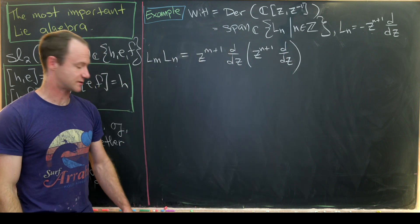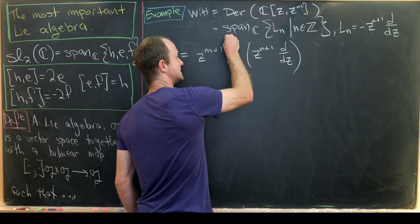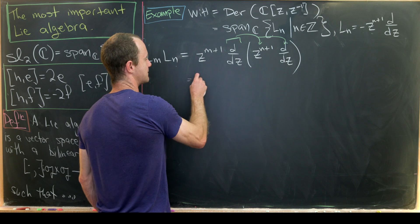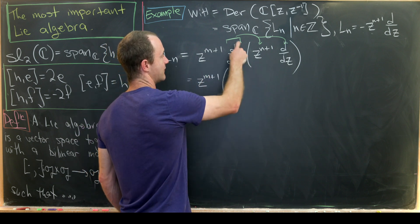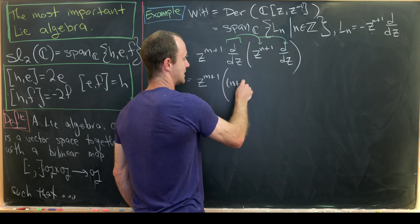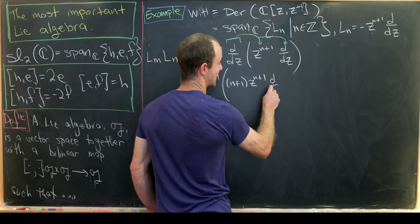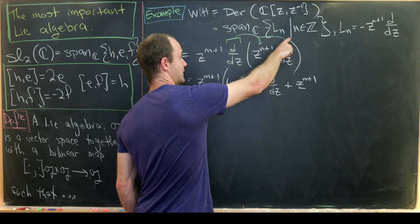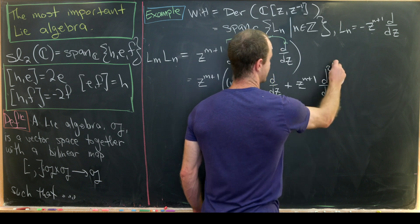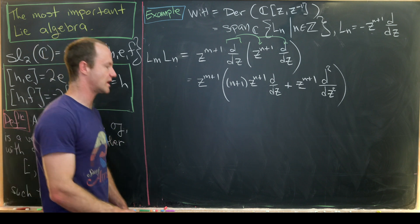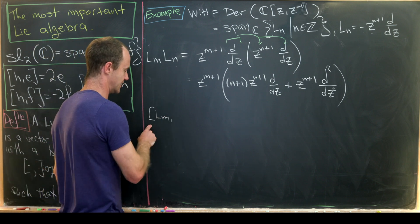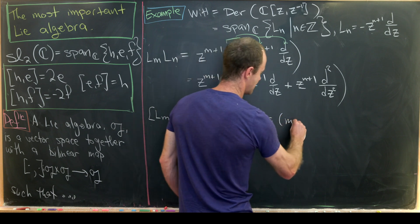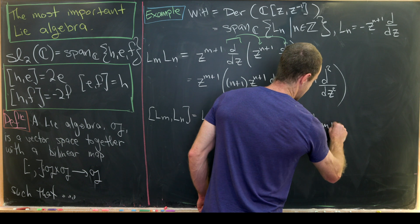Notice our minus signs cancel. Using the product rule, d/dz acting on z^(n+1) · d/dz gives (n+1)z^n · d/dz plus z^(n+1) · d²/dz². So Lₘ Lₙ = z^(m+1)[(n+1)z^n · d/dz + z^(n+1) · d²/dz²]. We can simplify, but let's jump directly to the commutator.